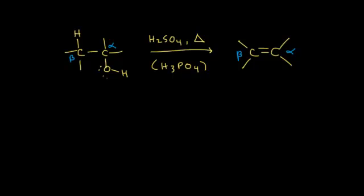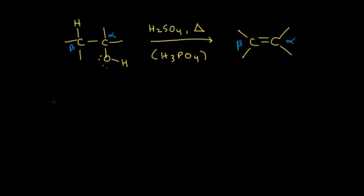In the last video, we took a look at the dehydration of an alcohol to form an alkene and looked at the mechanism. In this video, we're going to look at the regioselectivity and the stereoselectivity of this reaction. Regioselectivity refers to what region of the molecule the reaction will take place. The double bond forms between our alpha and beta carbons, but what if we have different beta carbons? That's where regioselectivity comes in.